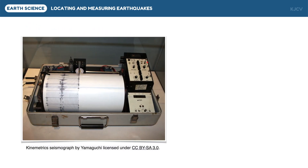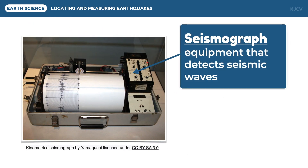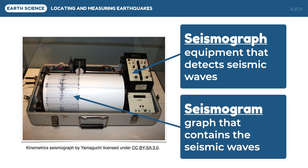Earthquakes are located and measured using a seismograph. It is an equipment that detects the shaking of the earth in the form of seismic waves. Once the seismograph detects vibrations, a graph will be created in the form of a seismogram. This graph gives a picture of the behavior of the seismic waves.